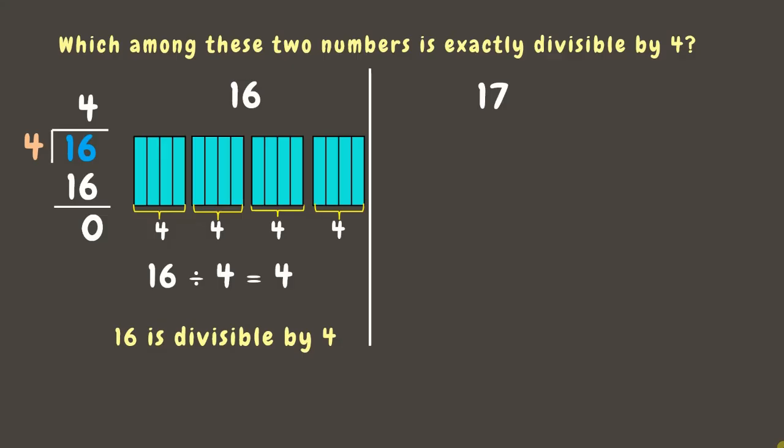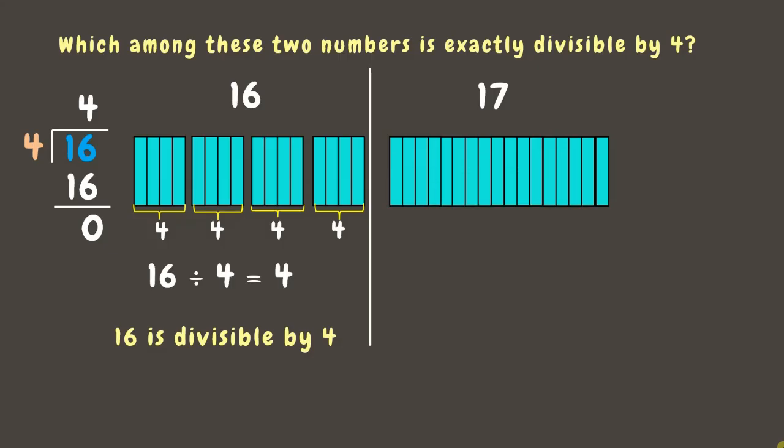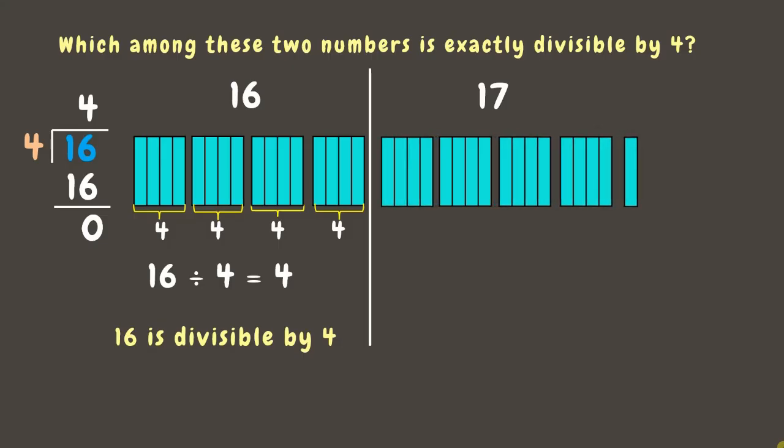Now let's try dividing the number 17 by 4. Using the bar model approach, if we divide 17 by 4 we'll have four groups of 4 with a remainder of 1. Now let's check this using the long division method.